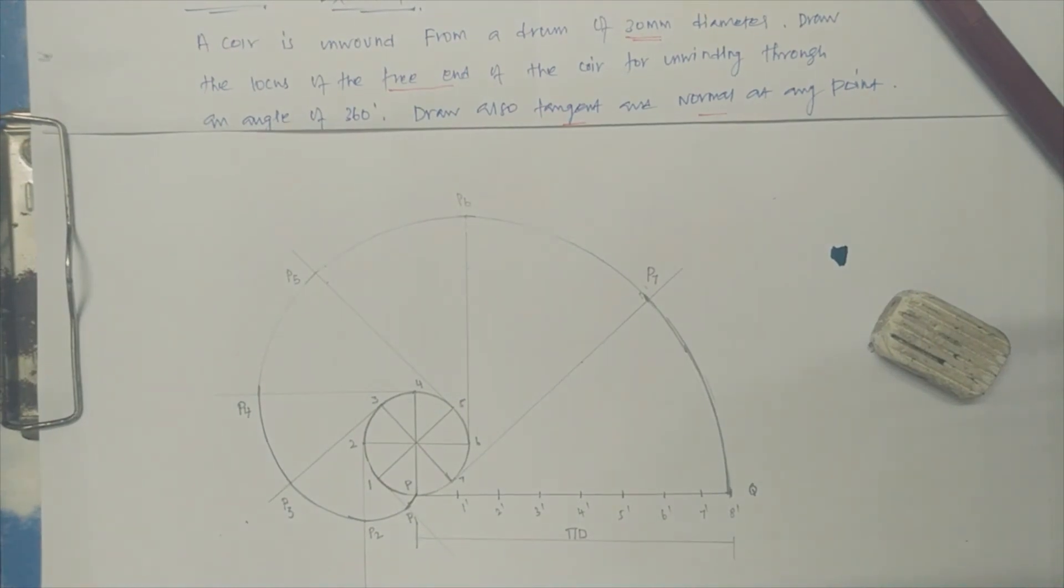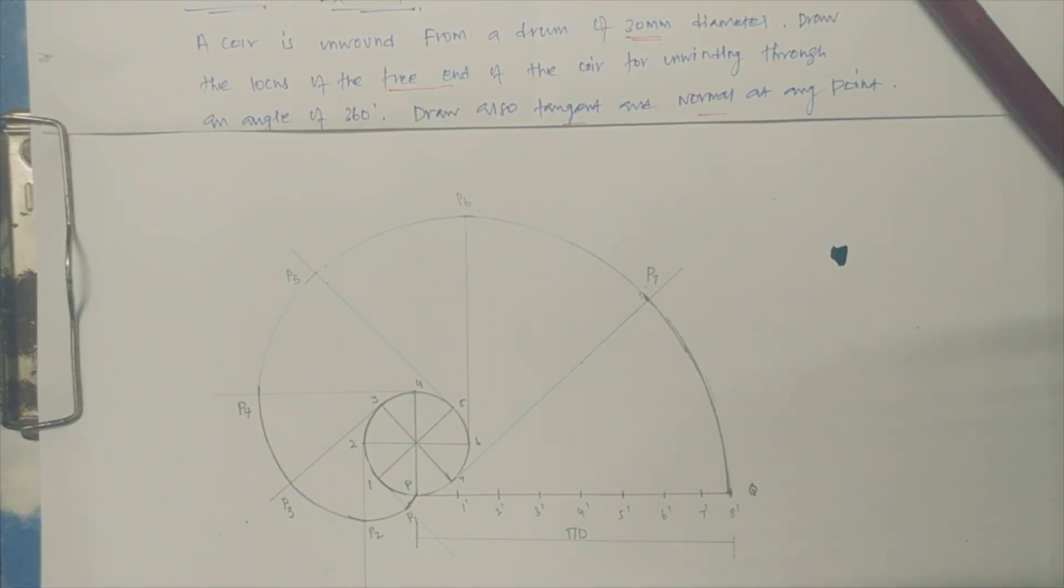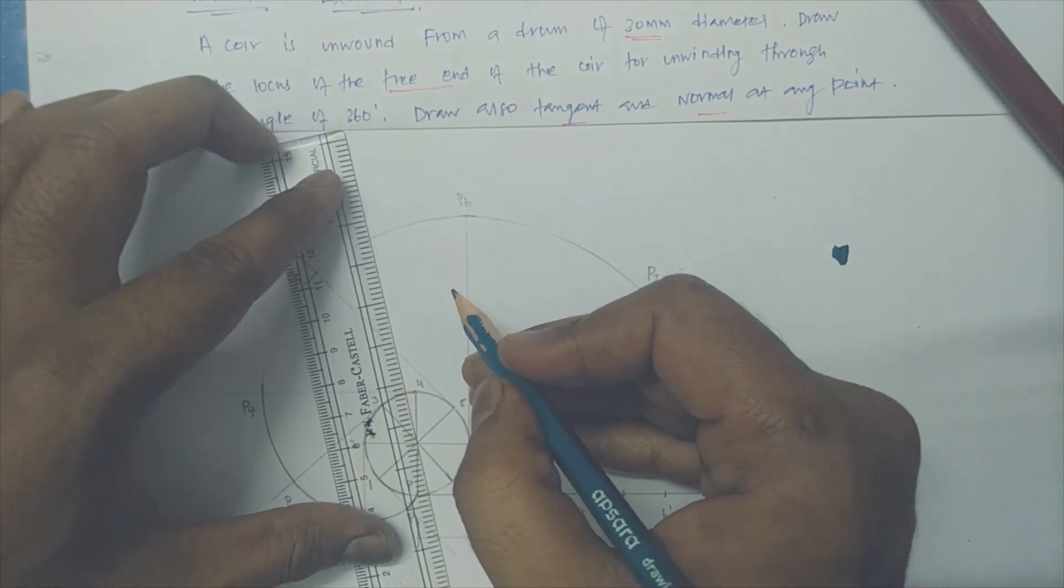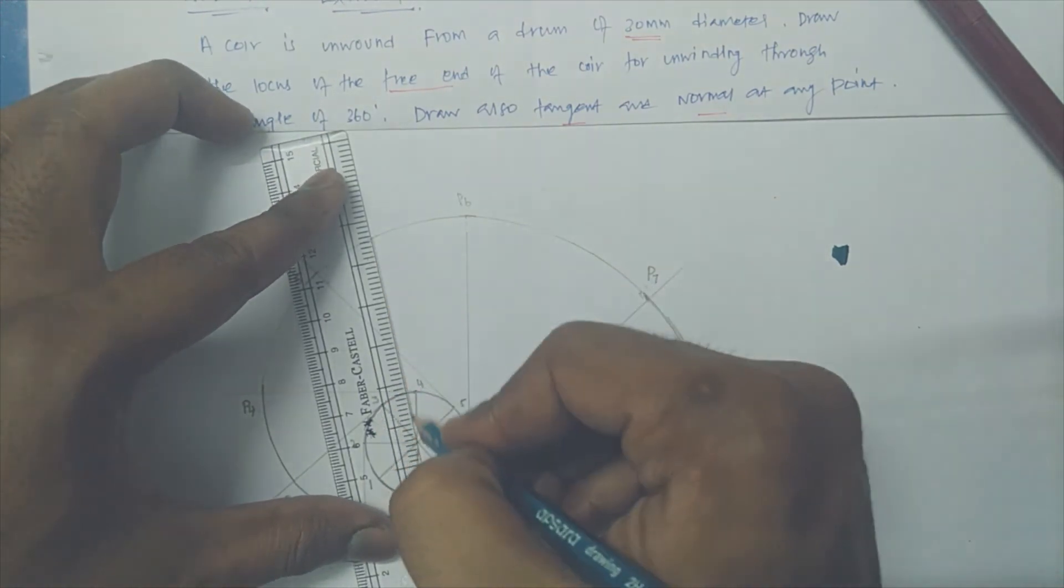Exactly it will meet. So this is the profile for an involute of drum. Obviously we need to draw normal and tangent anywhere at the point. Let us mark here one point, that is for a tangent. So let us mark this point is M.